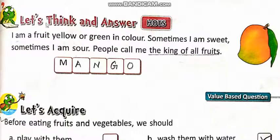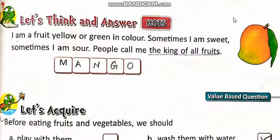Let us think and answer. I am a fruit. Yellow and green in color. Sometimes I am sweet, sometimes I am sour. People call me the king of all fruits. So this one is mango. M-A-N-G-O.